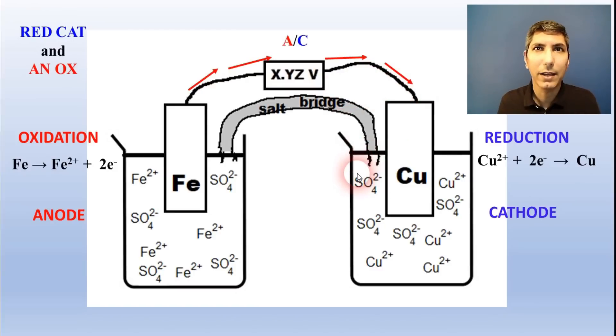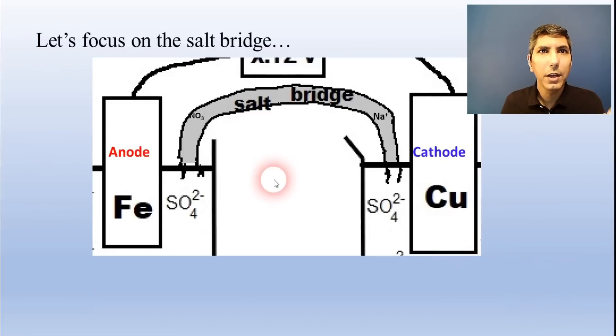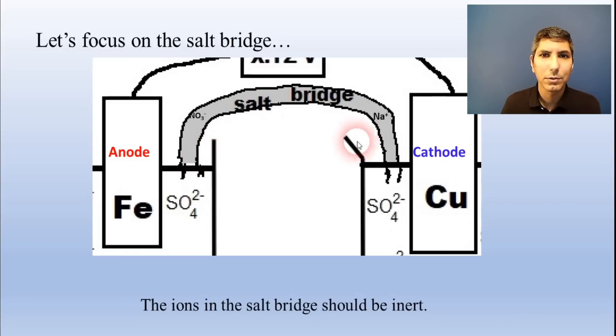If these are metallic electrodes, the cathode should always increase in mass. The cat gets fat. The salt bridge equalizes the charge as ions react at the electrodes. For the salt bridge, we use ions that won't react with anything else in the galvanic cell. So, sodium and nitrate ions are common choices.